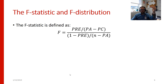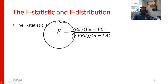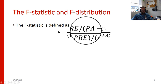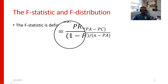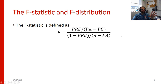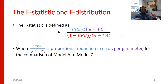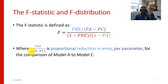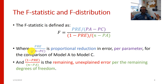Here is the formula for calculating the F value. F is equal to the ratio of PRE divided by the parameters in the augmented model minus the parameters in the compact model, divided by 1 minus PRE, which is itself divided by the number of observations minus the parameters in the augmented model. In the numerator, we're looking at the proportional reduction in error per parameter — how much variance is actually being explained compared to how many additional parameters we needed to use to explain that variance. And 1 minus PRE is any variance that is unexplained.